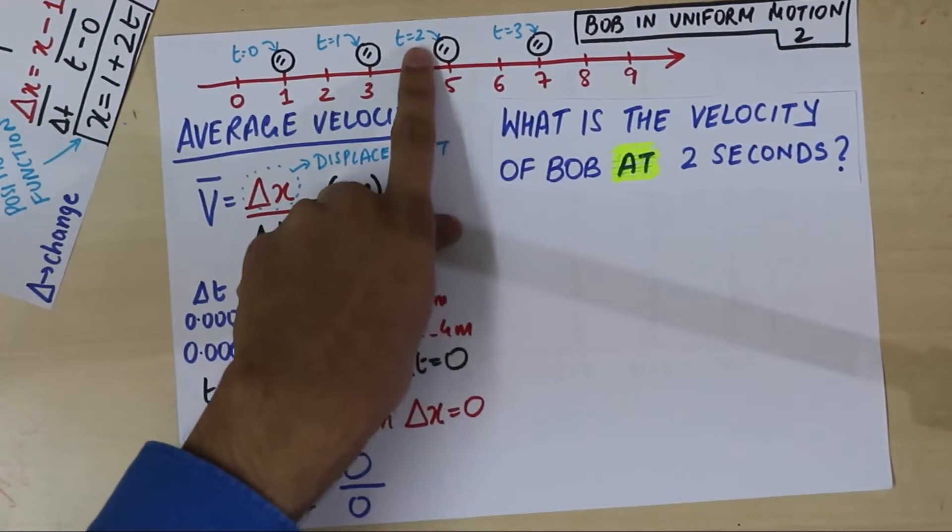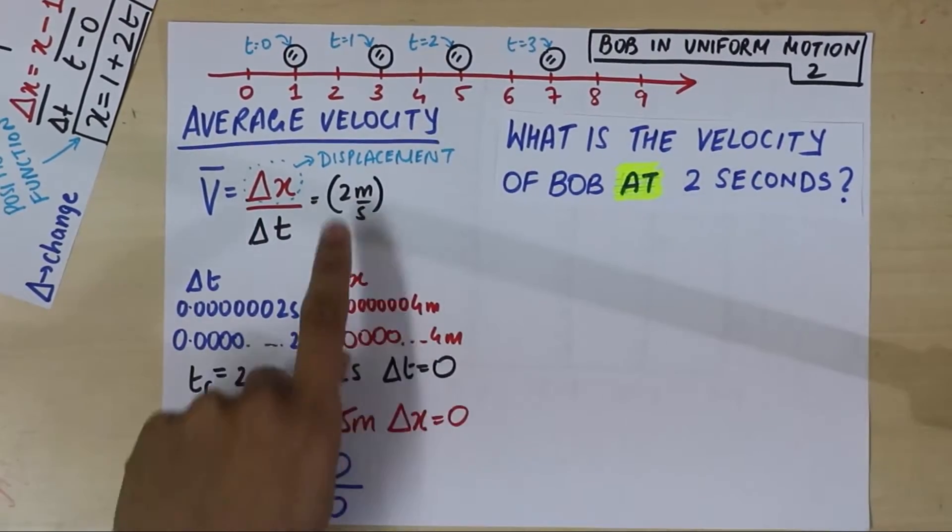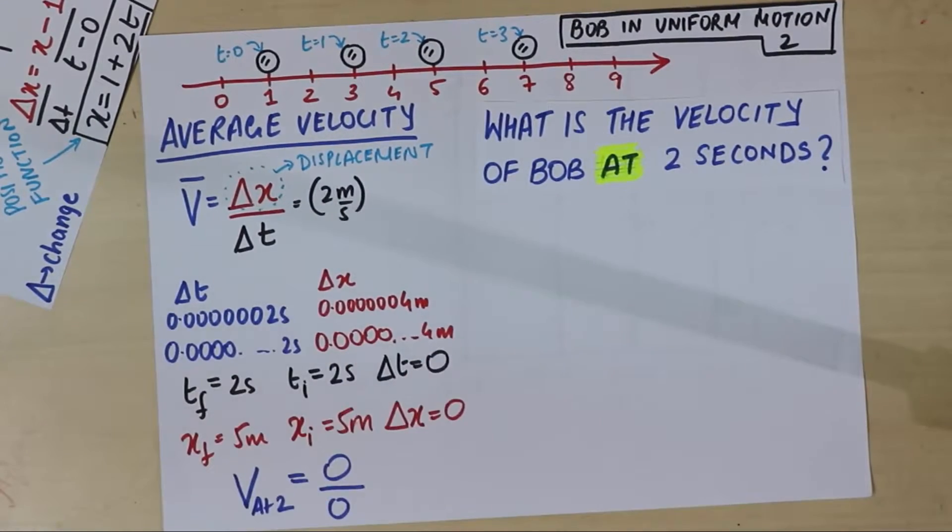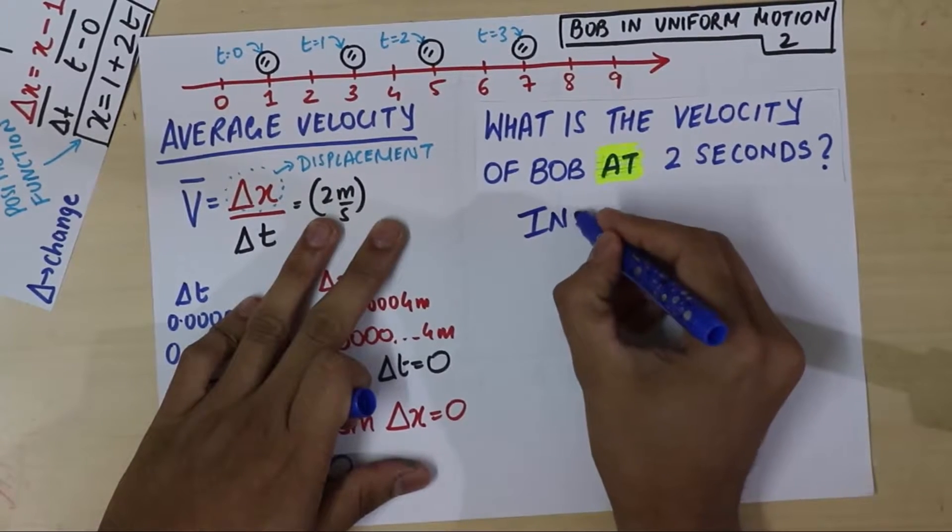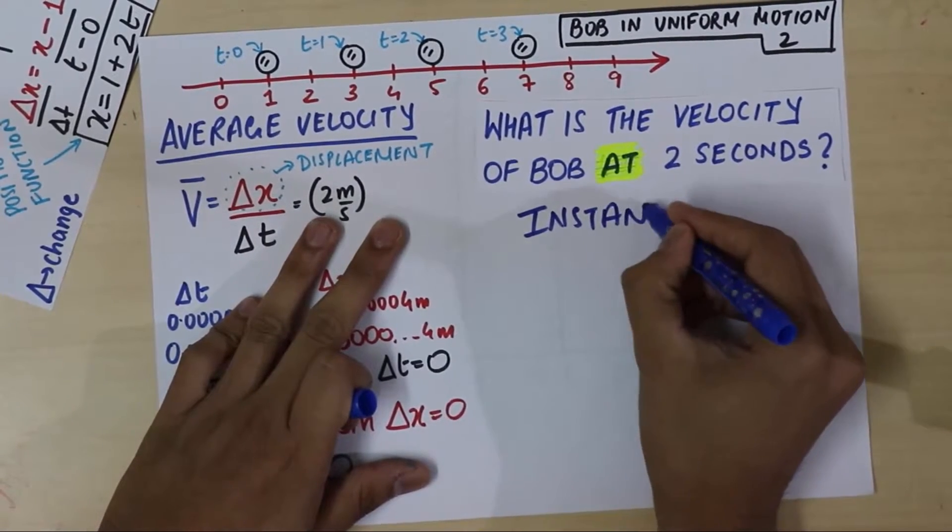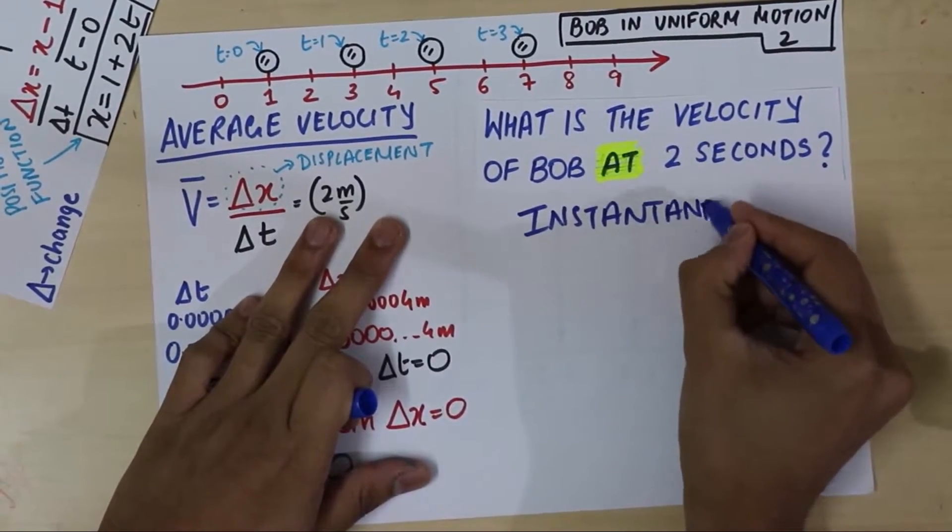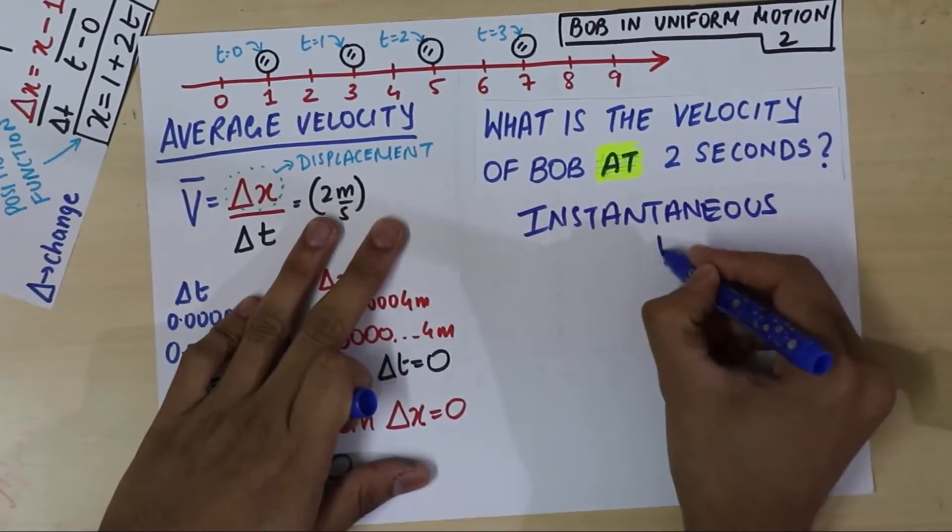The velocity at, at, at, at 2 seconds will still remain 2 meters per second.